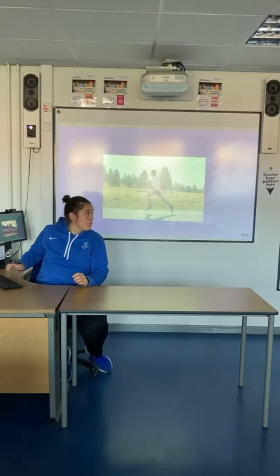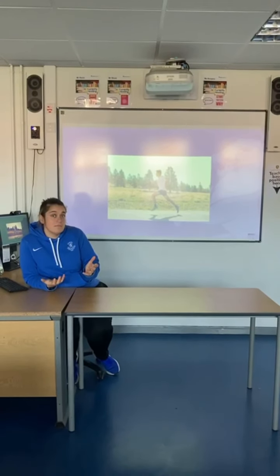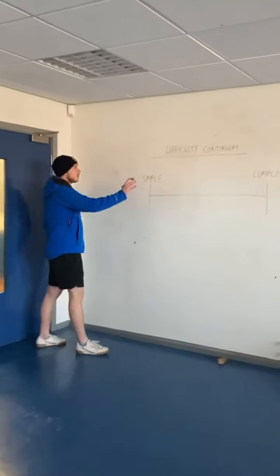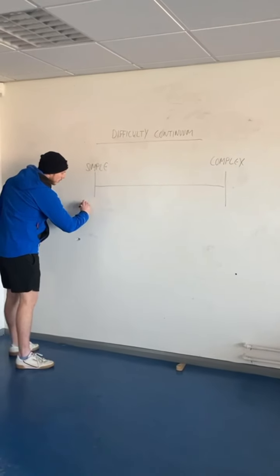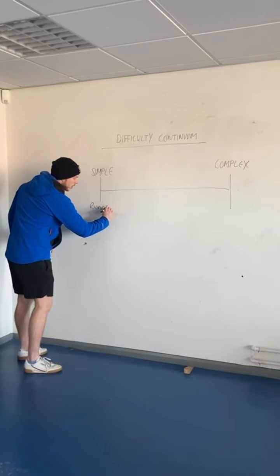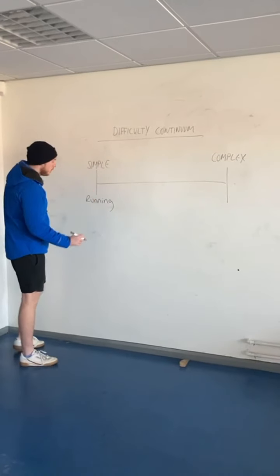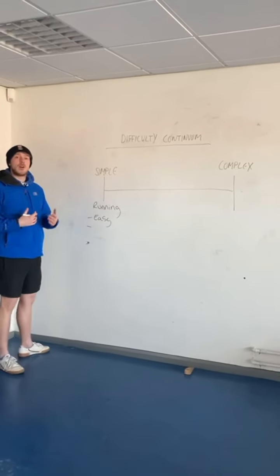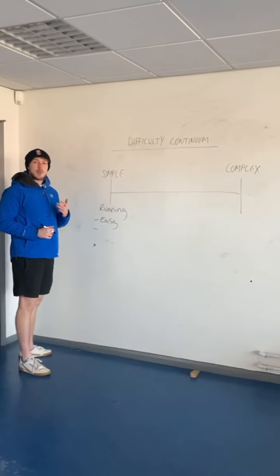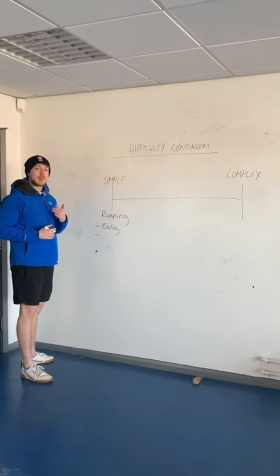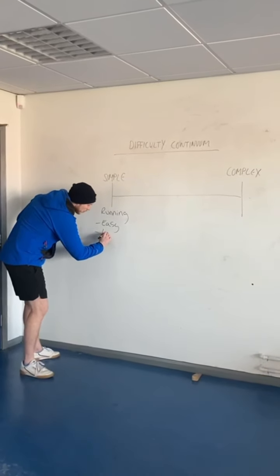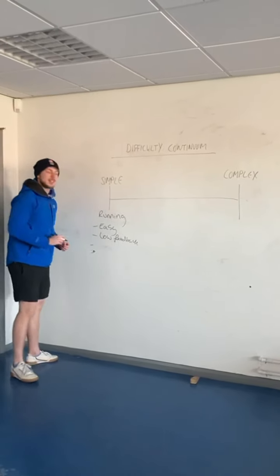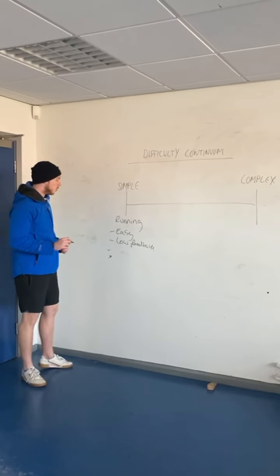Something like running is going to be a simple skill. Could we place running at the very end of that continuum? So we've got our difficulty continuum here, and on the simple end we put running. We know running is a simple skill because it's easy to do, it doesn't require much thought, it doesn't require much feedback — your body doesn't need much feedback to know you're running correctly — and it has a minimal or low amount of subroutines needed.